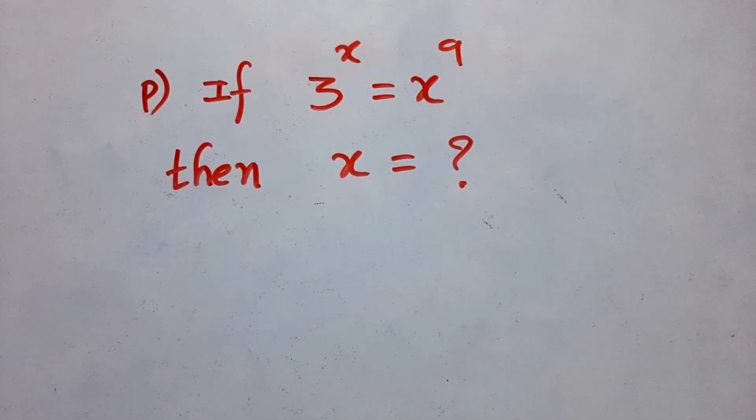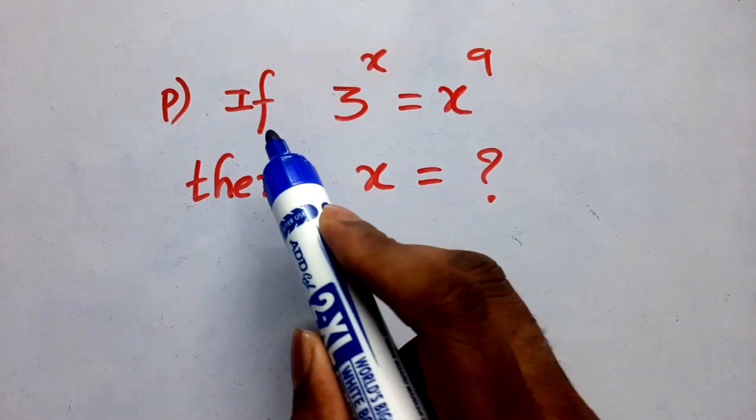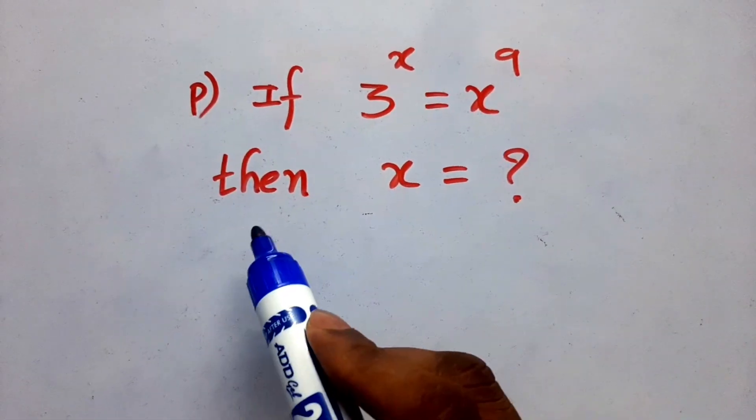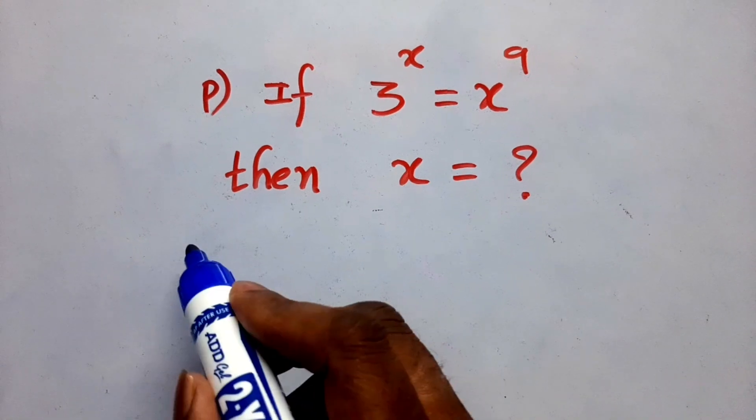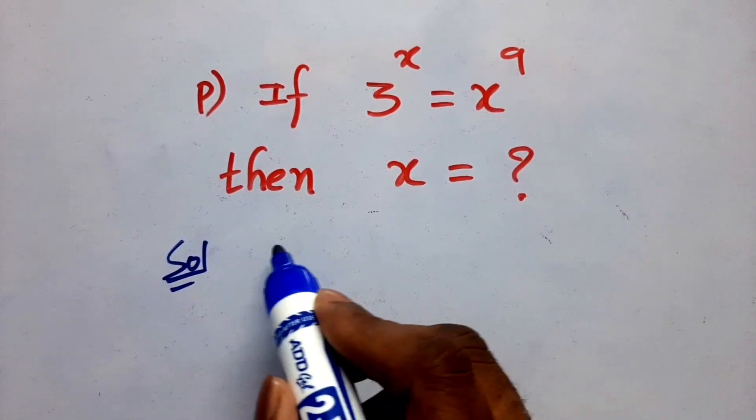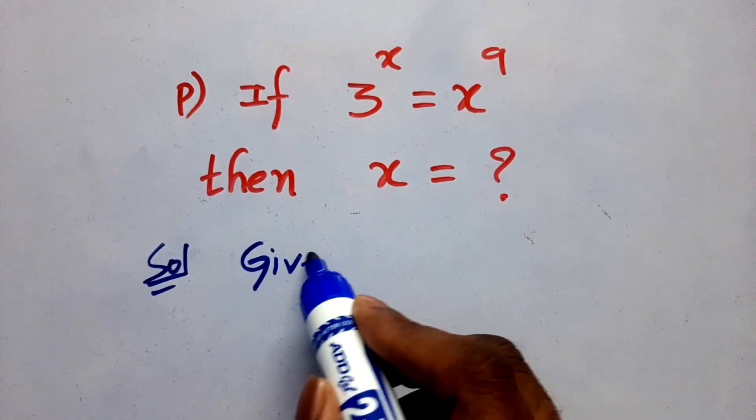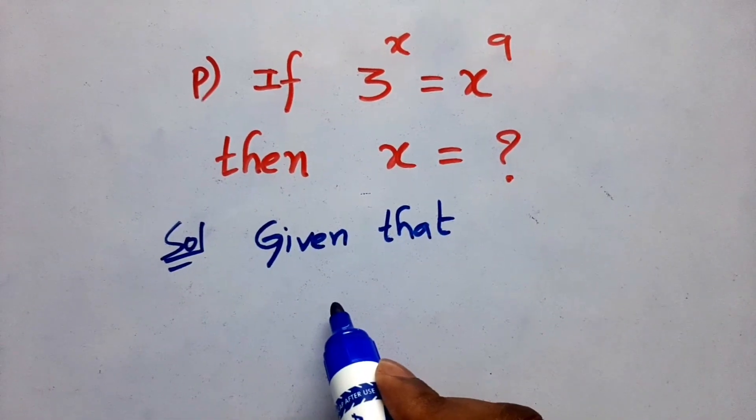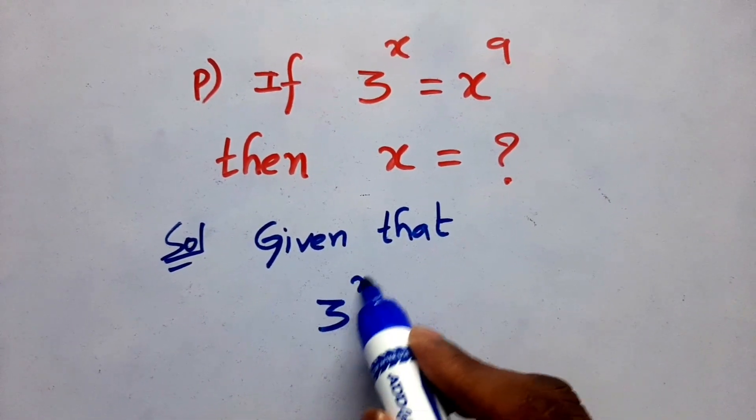Hi everyone, see this problem: if 3 to the power x is equal to x to the power 9, then x equal to how much? See the solution. First, write the given values. Given that 3 to the power x is equal to x to the power 9.